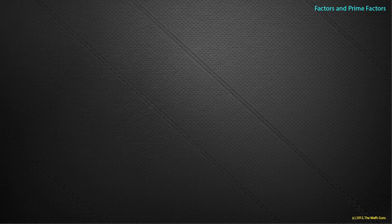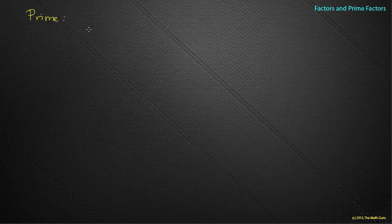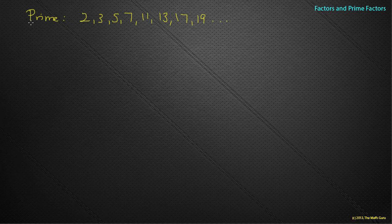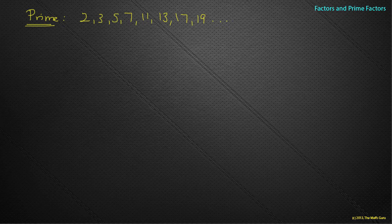Having worked out what a factor is, we can now look at prime factors. A prime factor is a prime number that divides into another number. The prime numbers are two, three, five, seven, eleven, thirteen, seventeen, nineteen, and so on — these are things you just have to learn. Prime factors are actually quite important later on in mathematics.